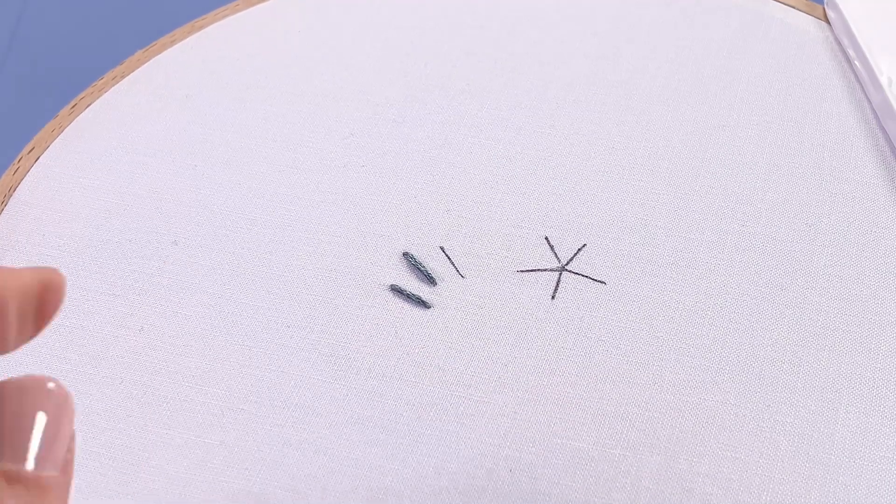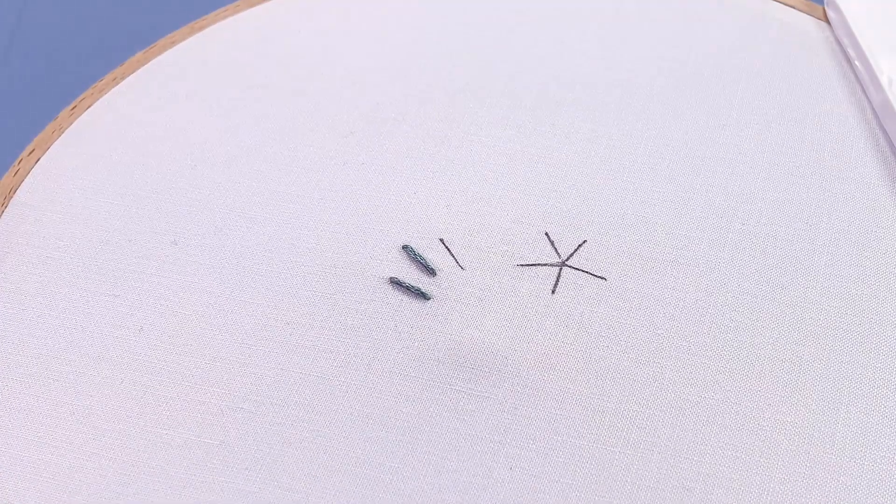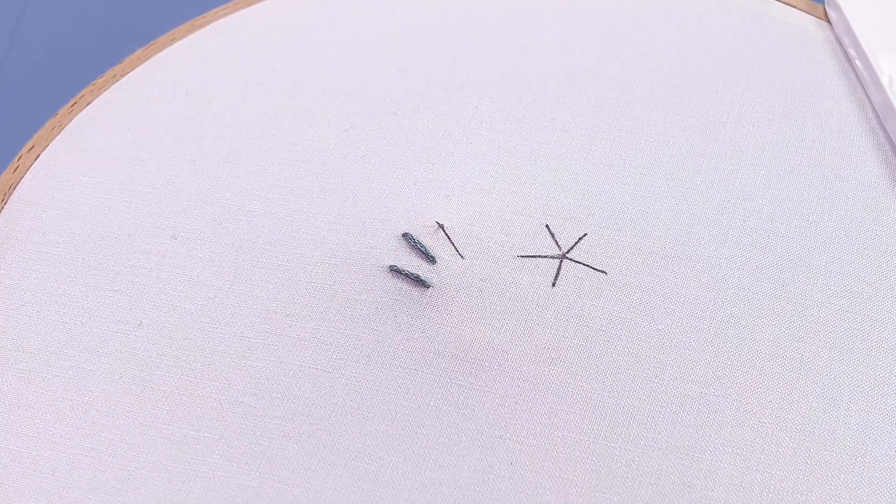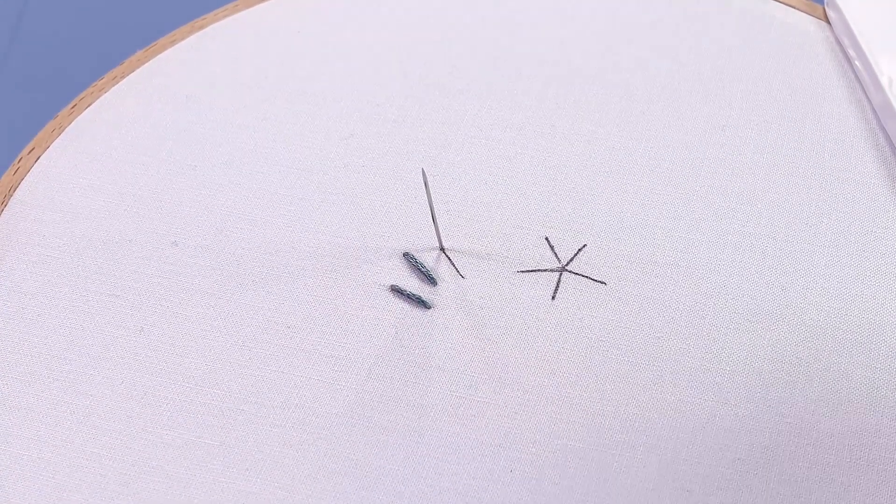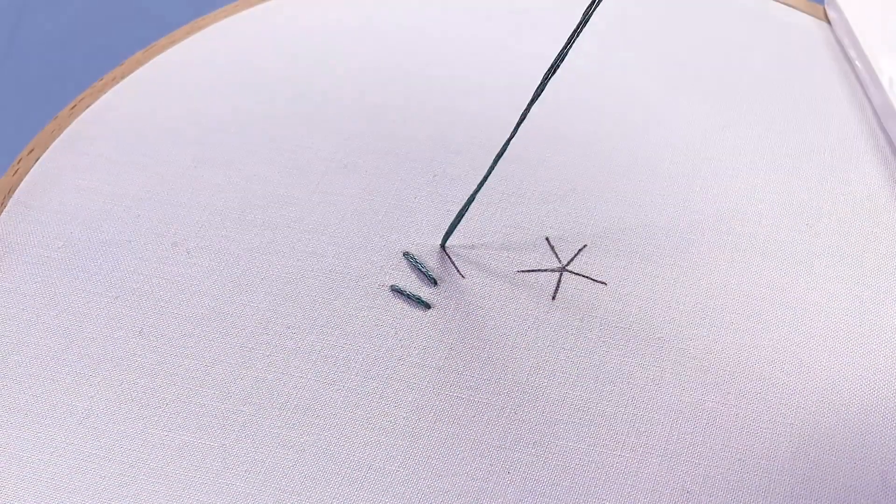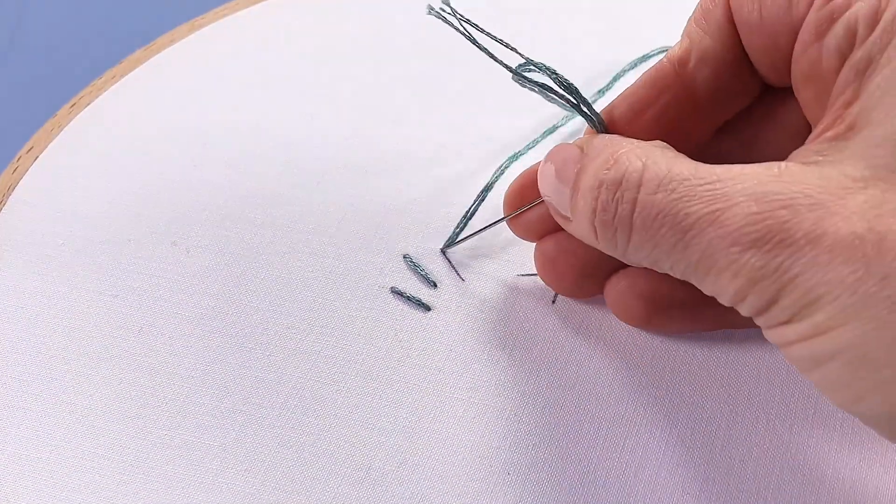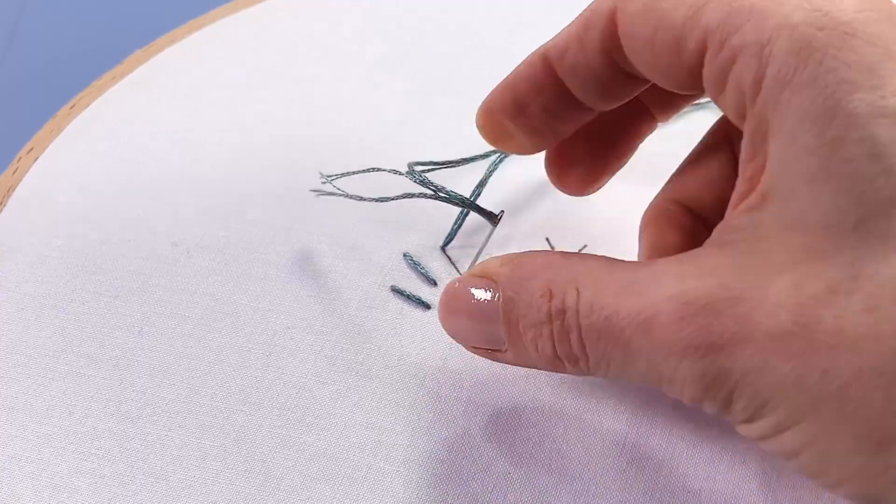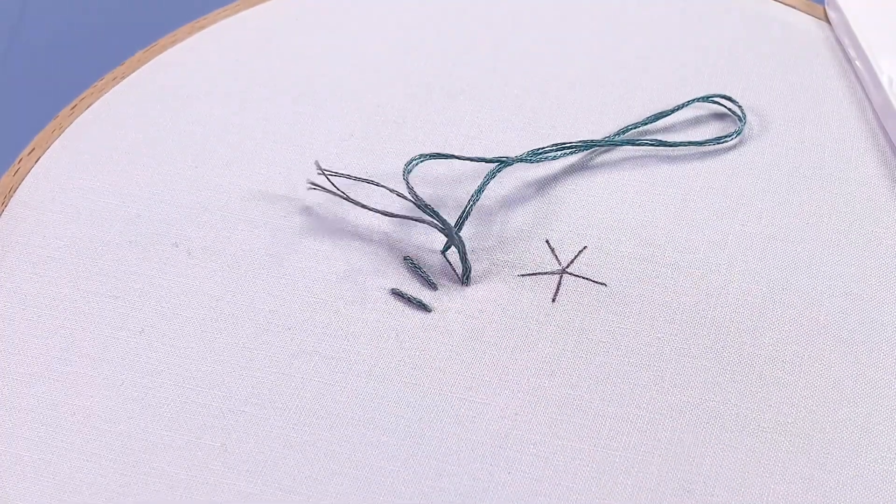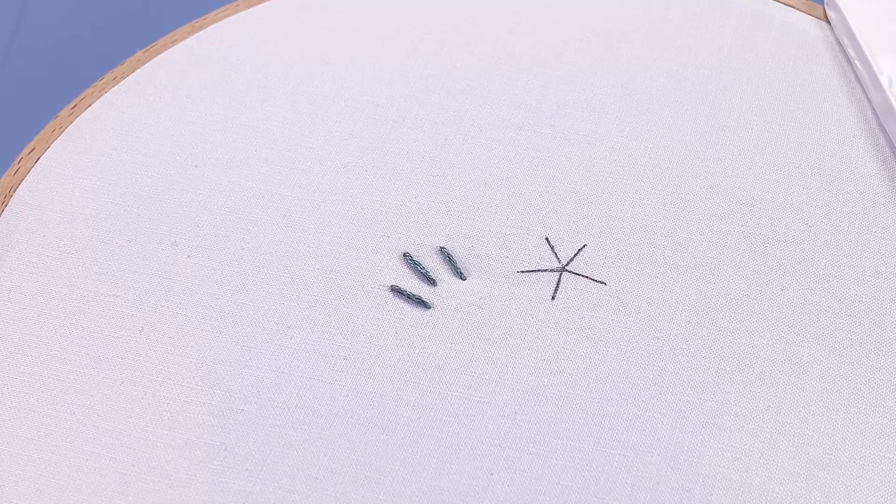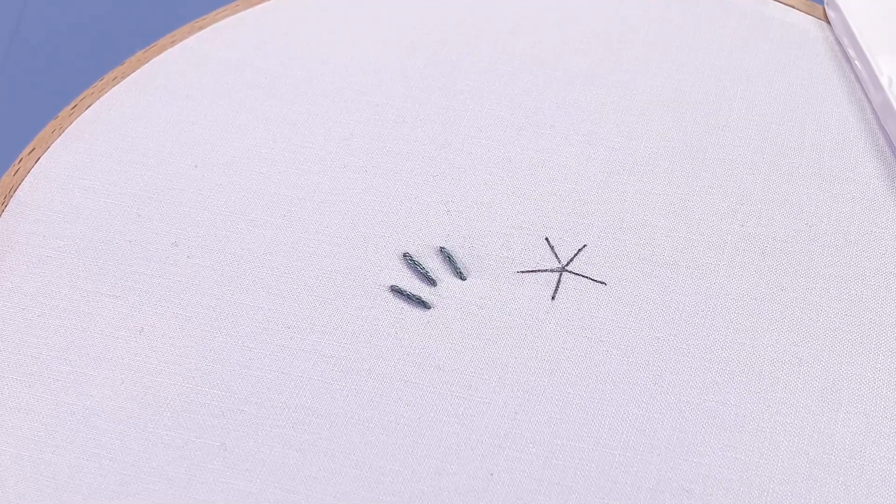So let's do that again. I know that this point here is closest to where I last finished, so I'm going to bring my needle up there. Draw through all the working thread and then let's poke our needle down at the other end of that stitch. Gently draw it all through to the underside and that is three straight stitches.